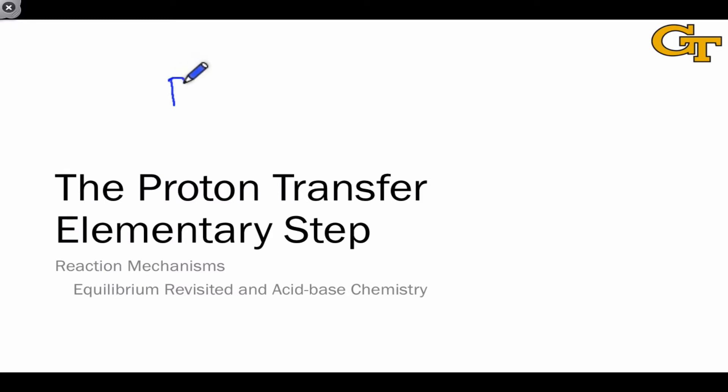Proton transfer involves the donation of a pair of electrons from a molecule we call the base toward a hydrogen in a molecule we call an acid, in an overall process that amounts to moving a proton from HA to B. The products are HB+, where the increase in formal charge comes from the transfer of a proton which is positively charged, and A-, which contains a new non-bonding pair of electrons and a negative charge for this same reason.